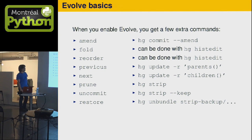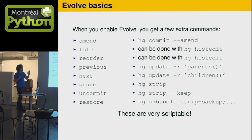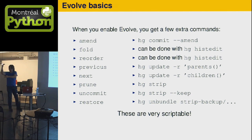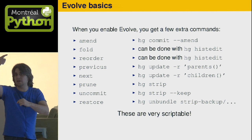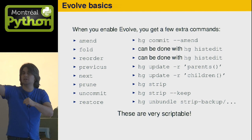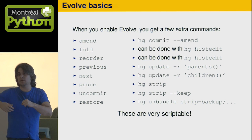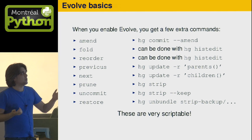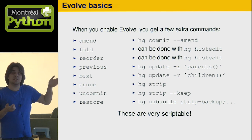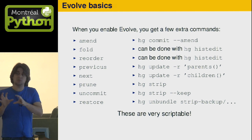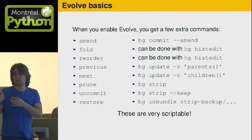Just for the Git users in the audience for reference. These are also very scriptable. One thing we don't like about histedit is that you have to create a plan file where you say pick this commit, reorder this one, delete that one, then edit that one. We don't like the plan file very much. We like these commands because we want to be able to script these things very easily. People actually build tools on top of Mercurial and they like our command line because it's very easy to script.